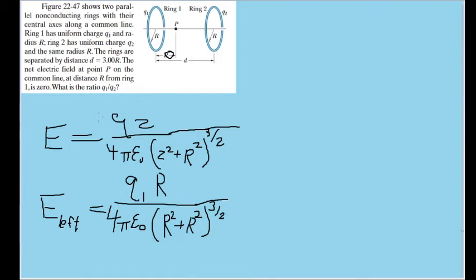And the problem also tells us that the distance between both circles, d, is 3 times r, the distance between one of the circles and the point p. So this means that there are two other r's effectively here along the way. And we can use this to see that the distance between the right ring and point p is 2r.